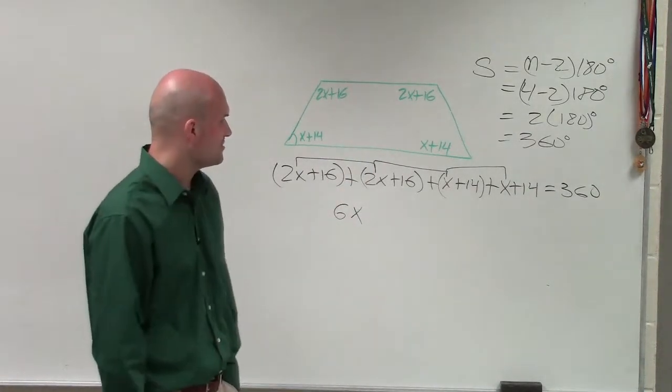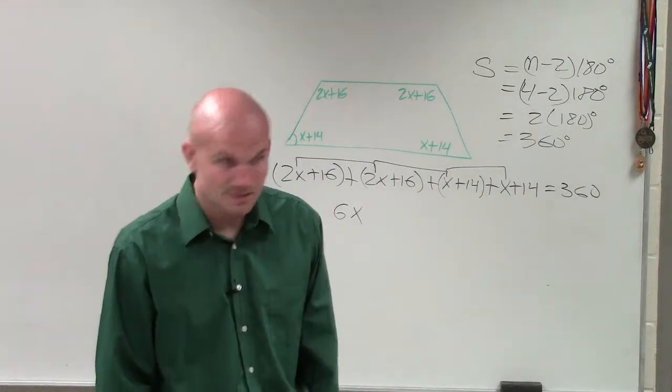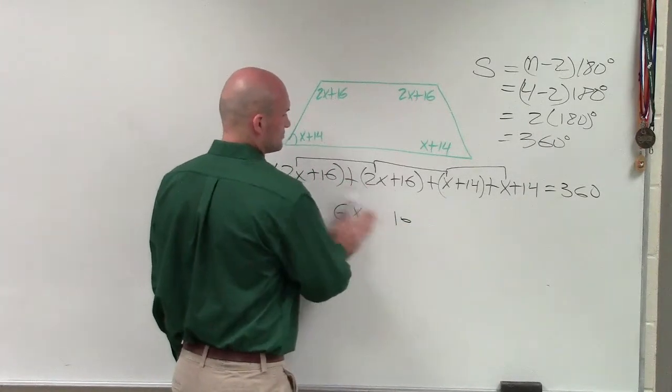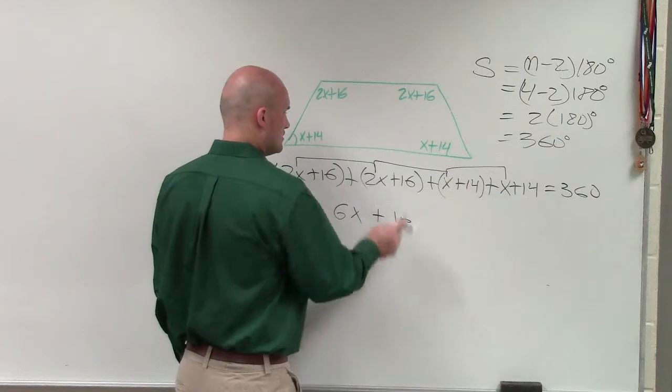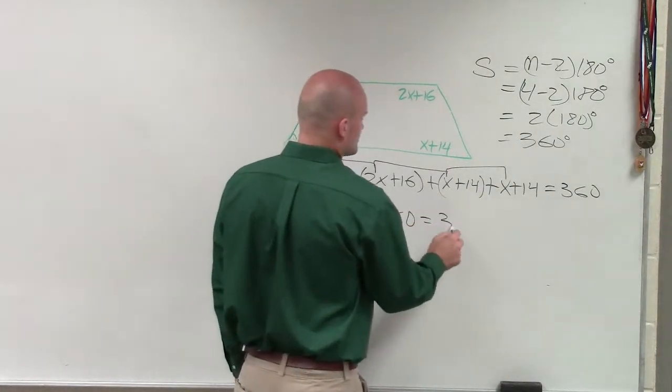16 plus 16 is 32, 14 plus 14 is 28, so that gives us... no, sorry, 60, right? Yeah. 6x plus 60 equals 360.